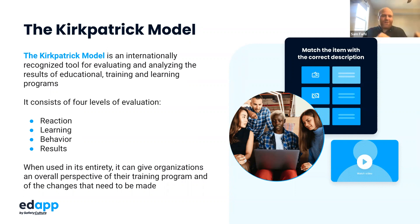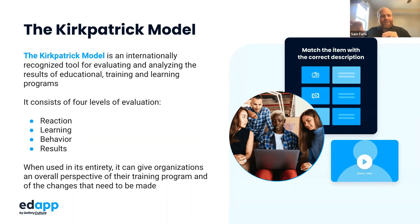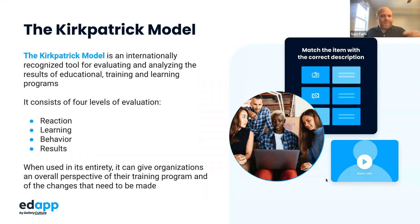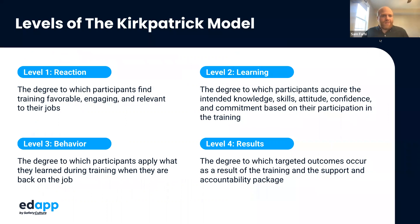Behavior is the ultimate goal, and it's very different from the fourth part: results. Behavioral change creates better results for the company. Is this resulting in a benefit to your organization? Your employee might have learned everything and their behavior has changed, but did it get your company the results you wanted? That's where results comes in — very different from behavior.